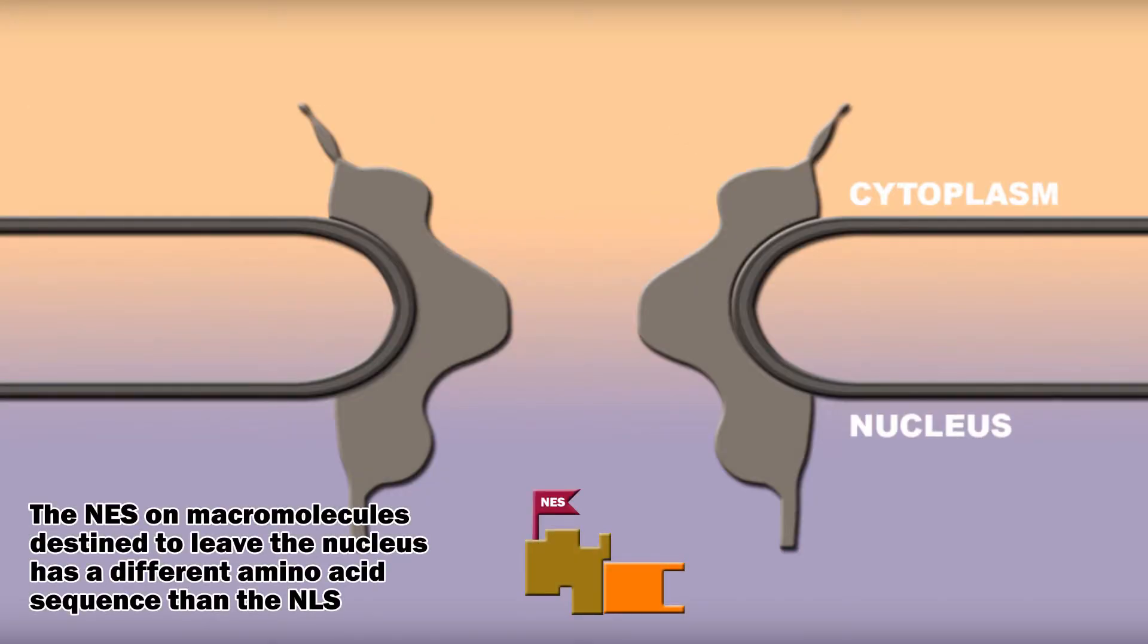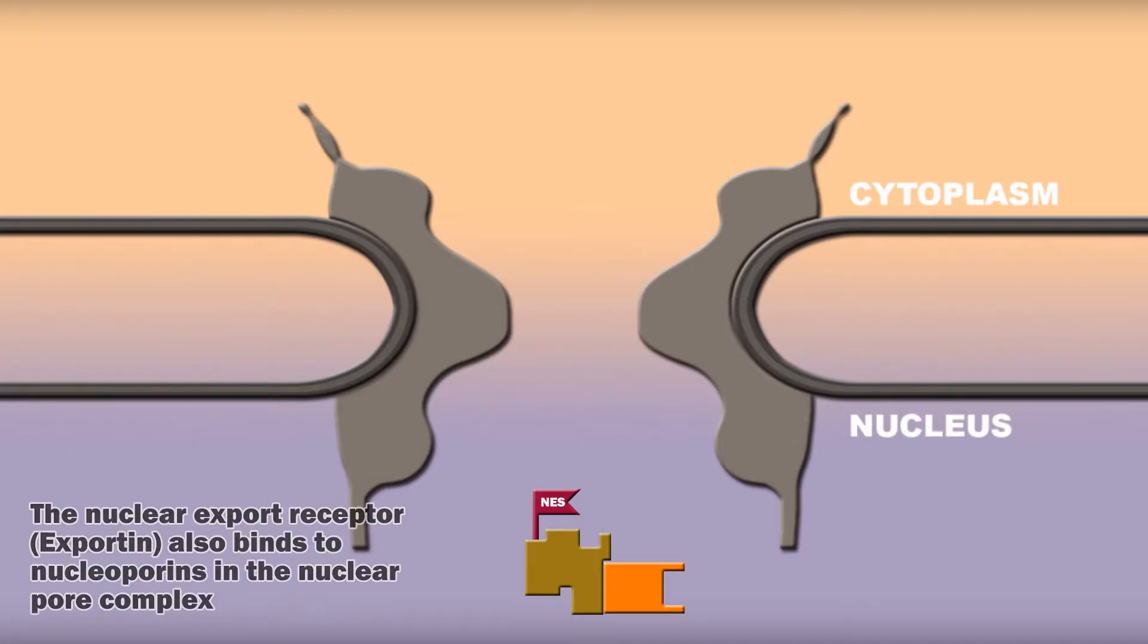The nuclear export signal on macromolecules destined to leave the nucleus has a different amino acid sequence than the nuclear import sequence. The nuclear export receptor also binds to nucleoporins in the nuclear pore complex and is similar in structure to the nuclear import receptor.